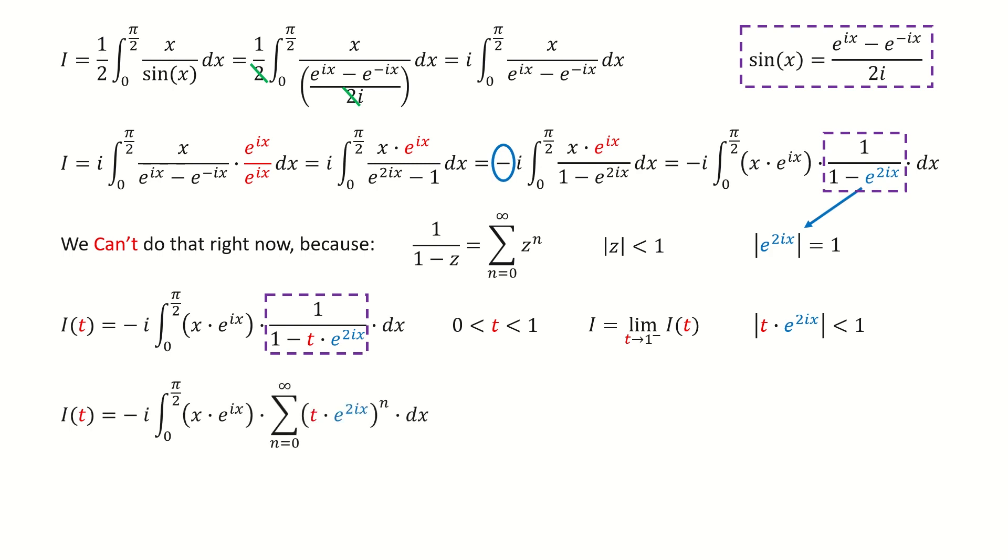After we do the series expansion, we got here. And note here, because this series is uniformly convergent, we can interchange the sum and the integral. After we switch the order for the sum and the integral, we got here.